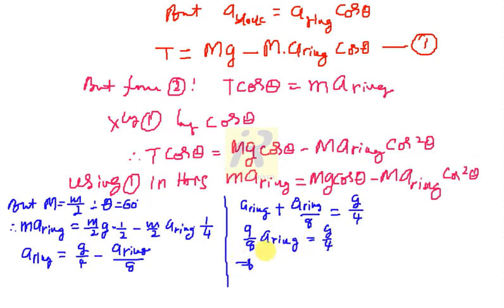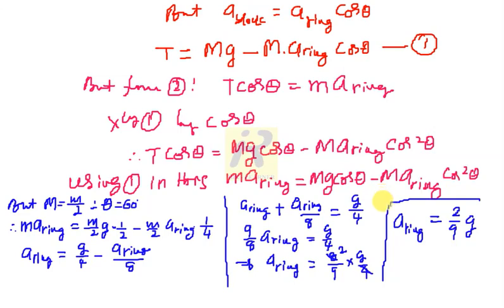Else, what I can write, a ring is equal to, it is 8 divided by 9 multiplied by g by 4. So, as soon as I solve this one, I get a ring is equal to, since here is 4 and here is 8, this becomes 2. So, it is 2 divided by 9 multiplied by g. This is the answer.